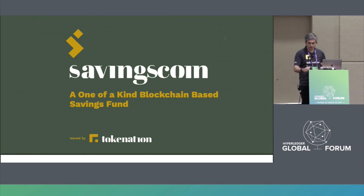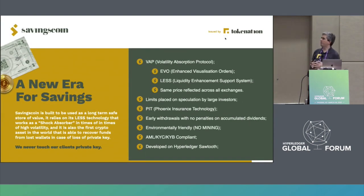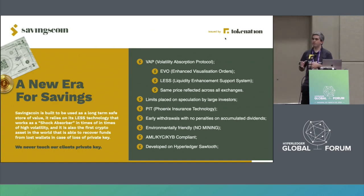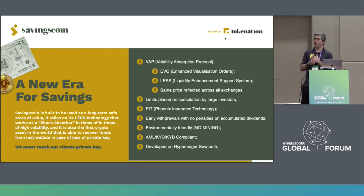Savings Coin represents a new era for savings based on crypto assets, and any other token launched on Token Nation benefits from the same algorithms. We truly believe that this minimization of volatility can represent an absolutely new era for cryptos. This can only be made a reality through frameworks like Hyperledger Sawtooth — open source, enterprise-grade ready — to provide the reliability and credibility that a project like this needs.